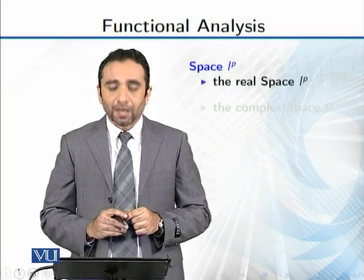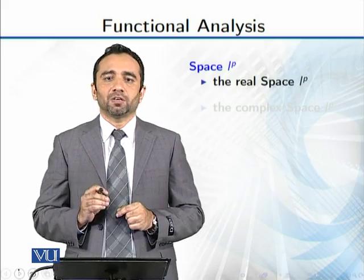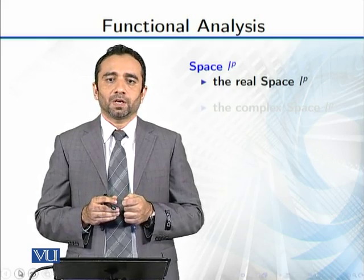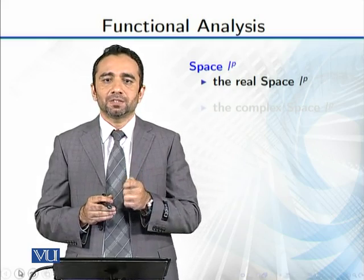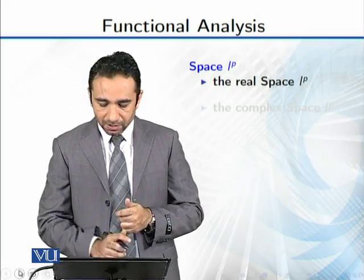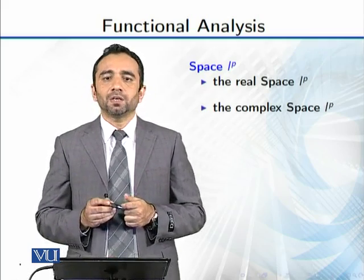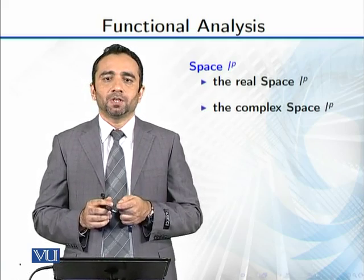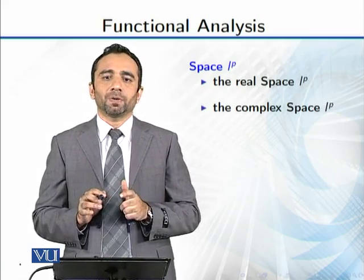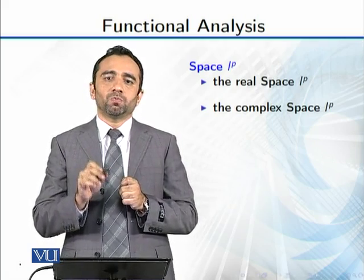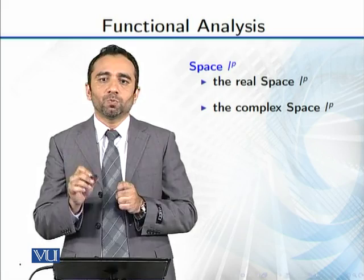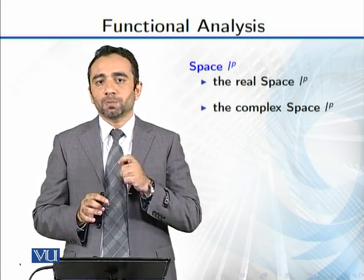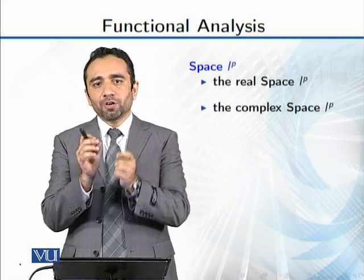If these are real numbers—ξ_i, η_i—if these entries are real numbers, then we call it real space l^p. If these entries are complex numbers, then we call it complex space l^p. The two conditions are the same: that you have that sequence, the summation |ξ_1|^p + |ξ_2|^p + ... should converge, should be less than infinity.